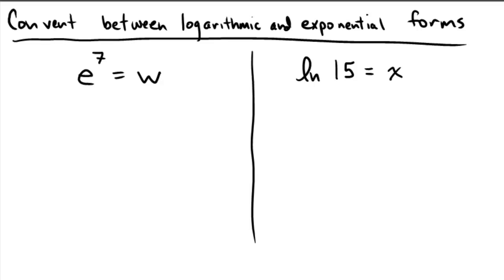So, on the left, we have e to the 7th equals w. e is exponential, e to the 7th is an exponential expression.